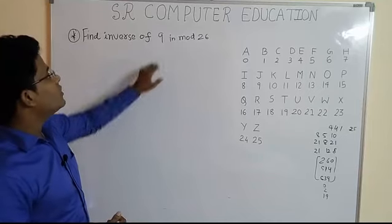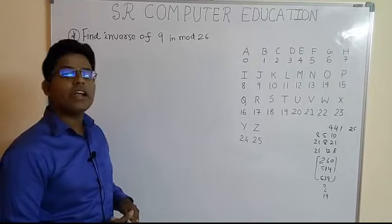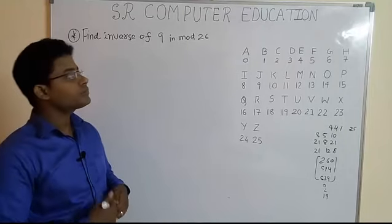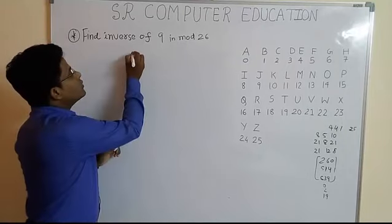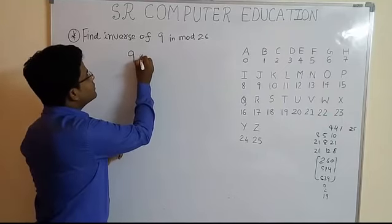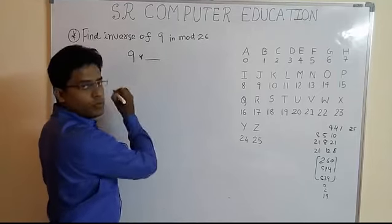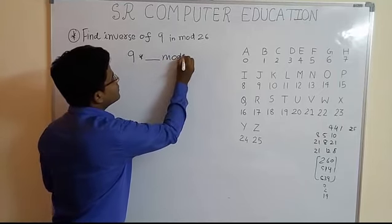So, in the Hill Cipher, we were finding the inverse of 9. So, let's see how to find inverse of any number. What you have to do, write that number multiply by, you have to put a space here, mod 26.